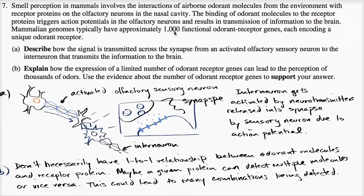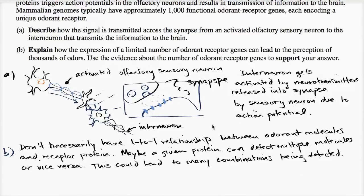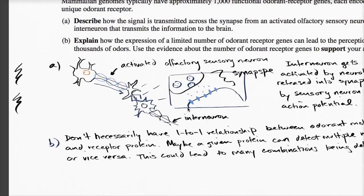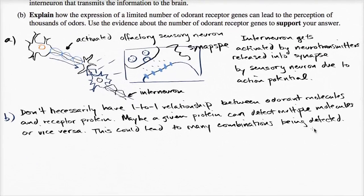So even though you could have maybe these 1,000 odorant genes, they code for 1,000 receptor proteins, this could lead to many combinations being detected, which would be different smells as perceived by brain.